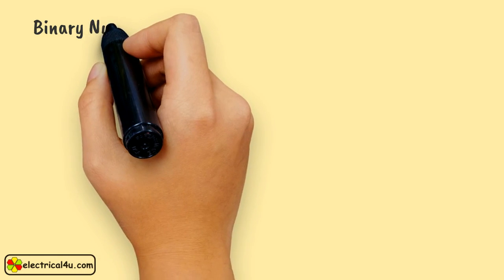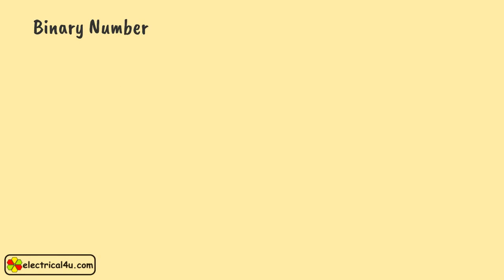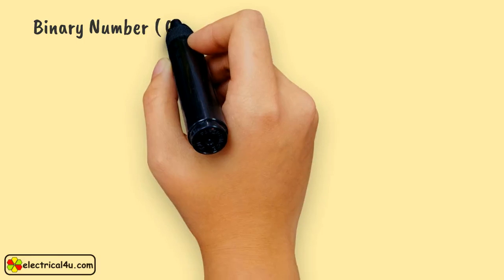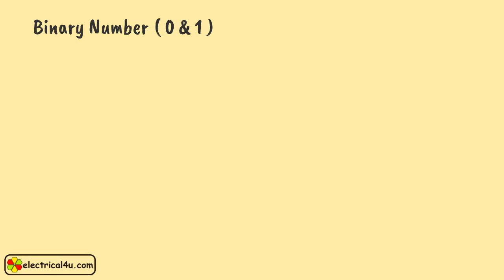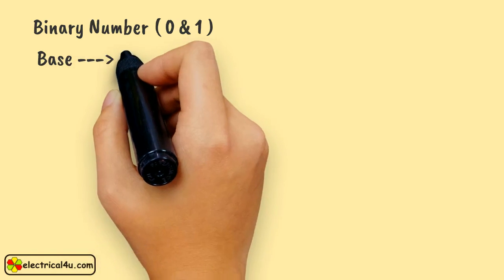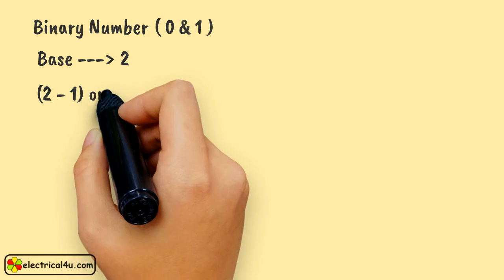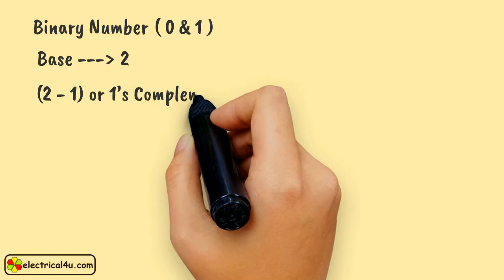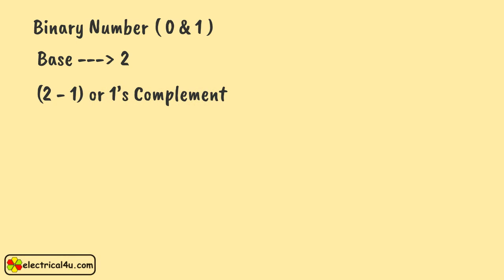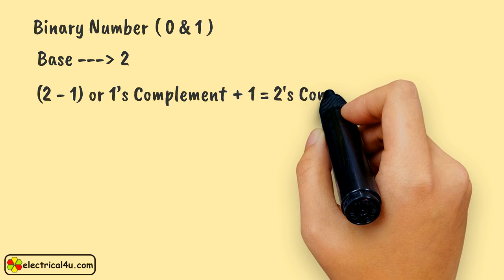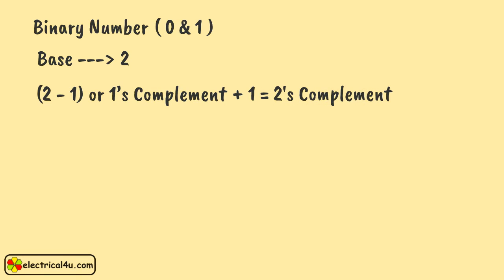Now come to a binary number, which is our main topic for discussion. It has only two digits, 0 and 1, and hence the name is binary. It has a base of 2. So if we subtract it from the highest number of that digit, then we get 2-1, that is 1's complement. If 1 is added with that, then we will get 2's complement.